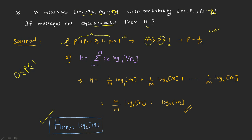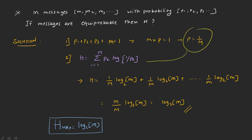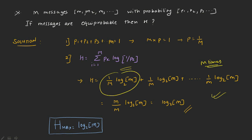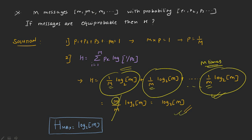Rearranging gives p equal to 1 by m. Once you substitute this probability into the entropy equation and expand, you get the same term repeated m times — starting from i equal to 1 up to m. Adding the same term m times gives m divided by m, which simplifies, and log to the base 2 of m remains. So H_max equals log to the base 2 of m, where m represents the number of messages.